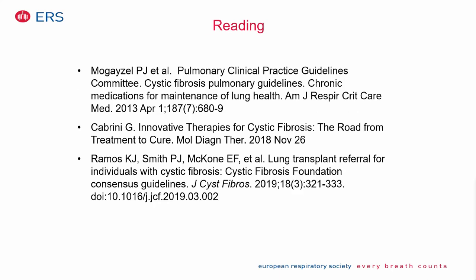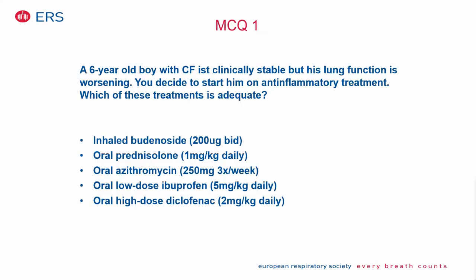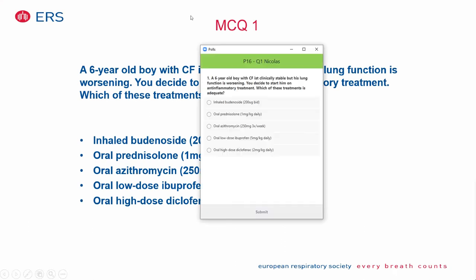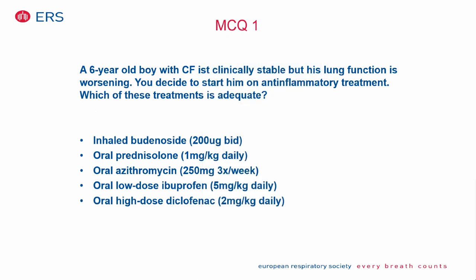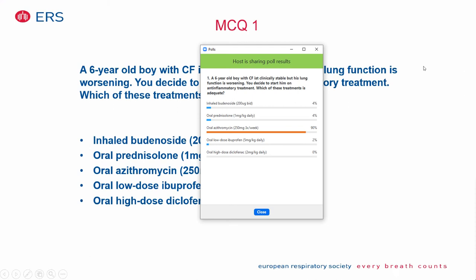MCQ 1: A 6-year-old boy with CF has stable clinical status but worsening lung function. Which anti-inflammatory treatment will you choose? The answer is azithromycin. Oral prednisone is reserved only as a rescue treatment in very severe cases — it has too many side effects and is certainly not a first-line treatment in children.